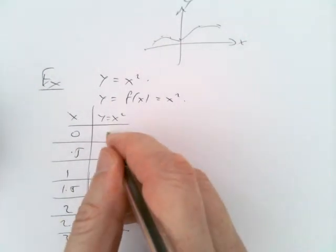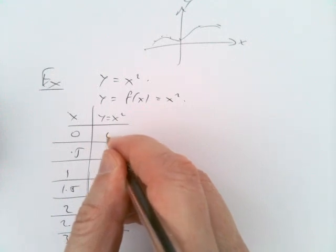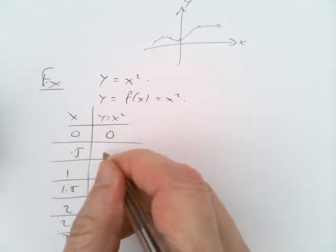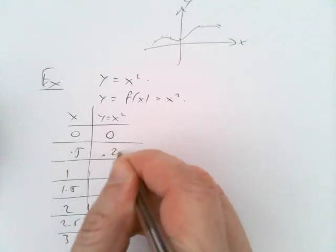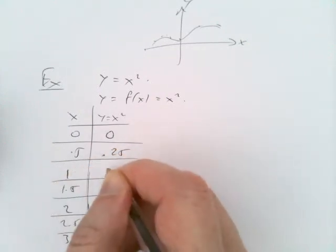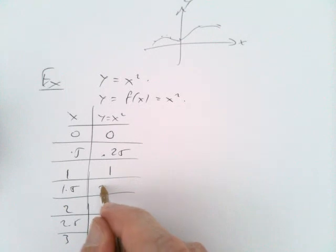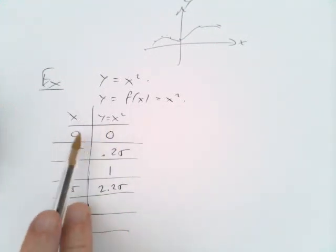0 squared is 0, 0.5 times 0.5 is 0.25, 1 times 1 is 1, 1.5 times 1.5 is 2.25.